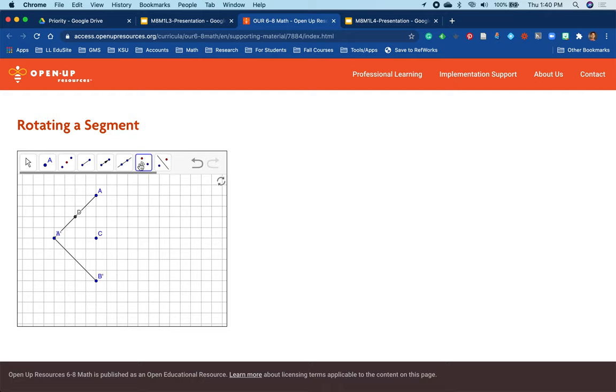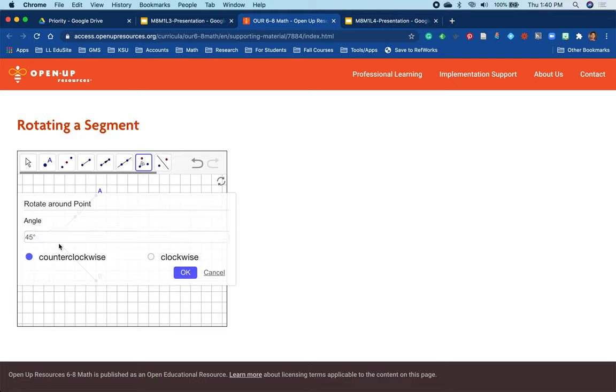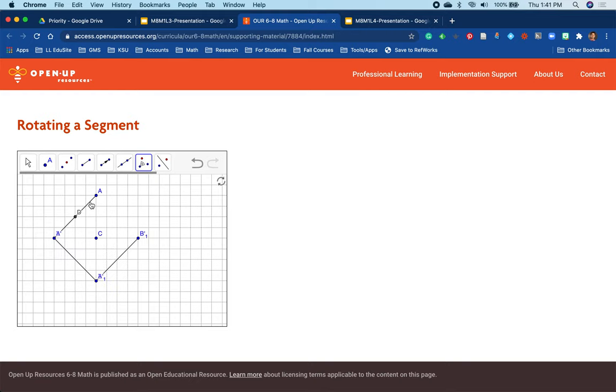And then what happens if I rotate it 180 degrees around C? It's parallel to the pre-image line segment. Notice also that when we rotate, the vertices are on the opposite side of the line segment. So A is now down here, A prime. B is now B prime.